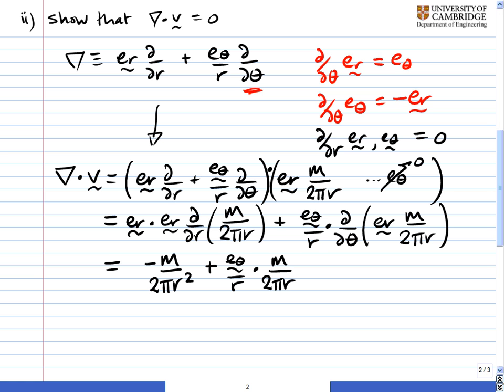So we've got an m over 2πr. And here we've got a d by dθ of e_r. And if we look at the top, d by dθ of e_r is equal to e_theta. So we've got an e_theta here. So we're going to get a minus m over 2πr squared from the first term,